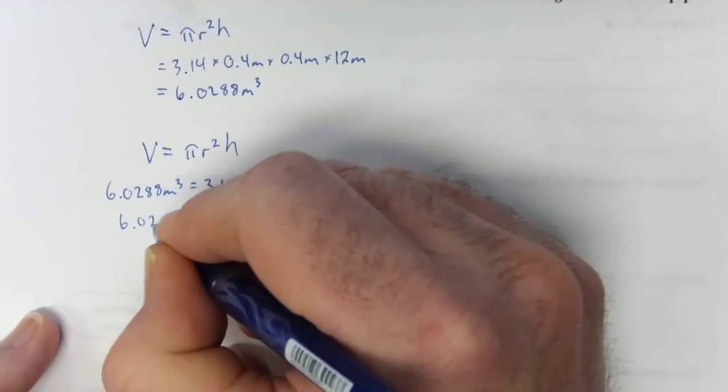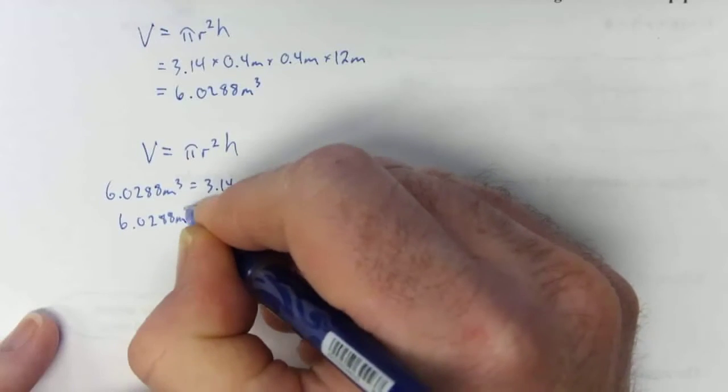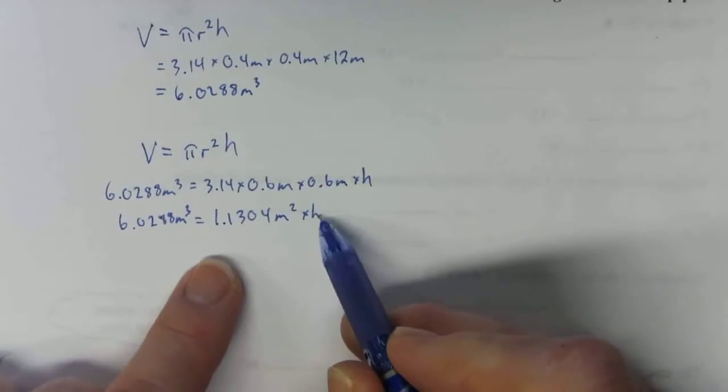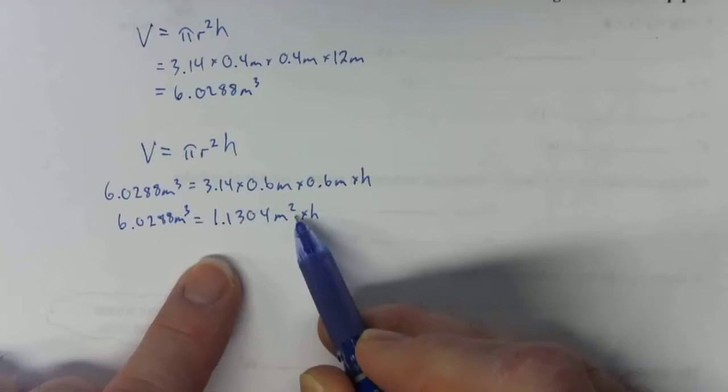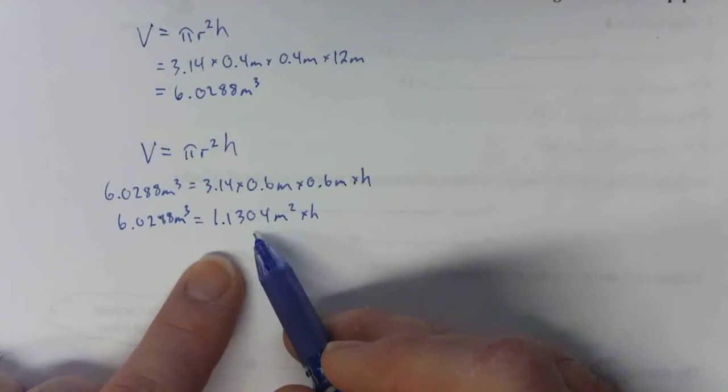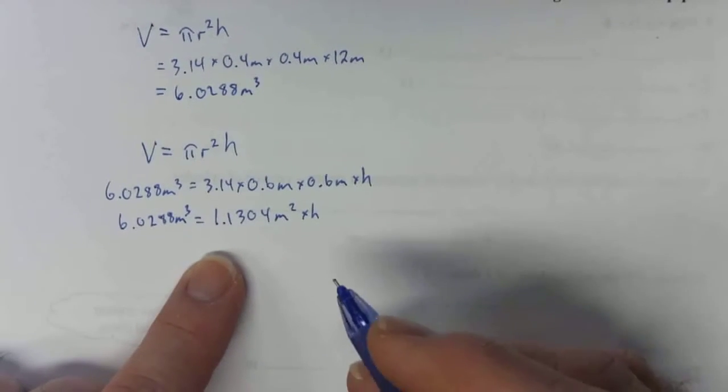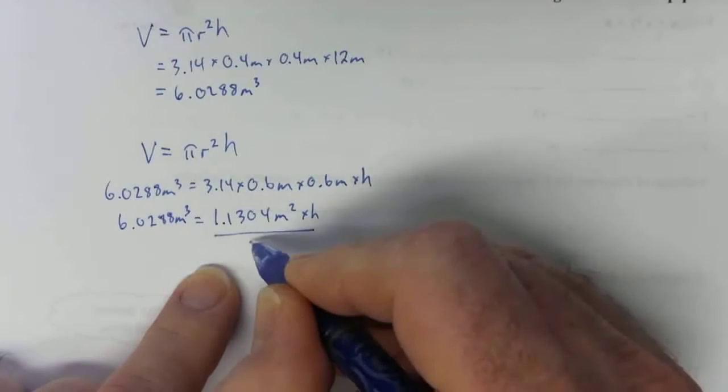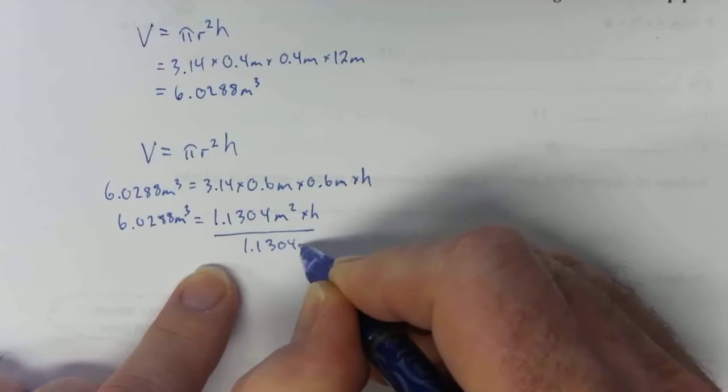And we still have the volume over here as well. We're trying to get h by itself. Right now it's being multiplied by a number, so we need to do the opposite of multiply, which is divide. So we're going to divide both sides by 1.1304 meters squared.